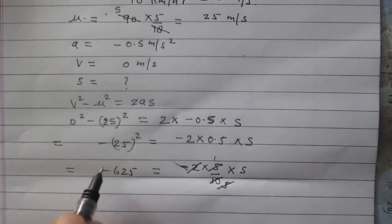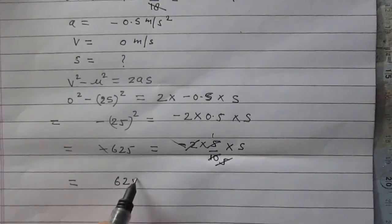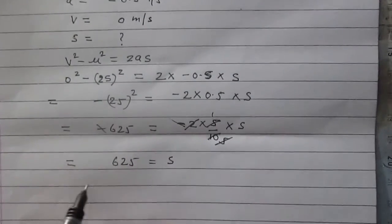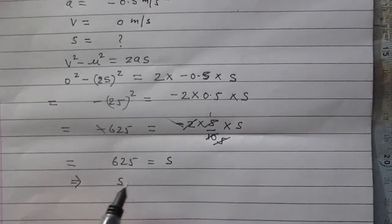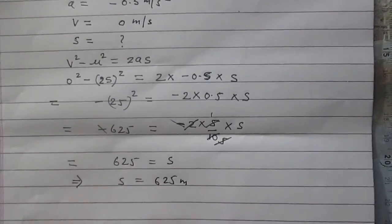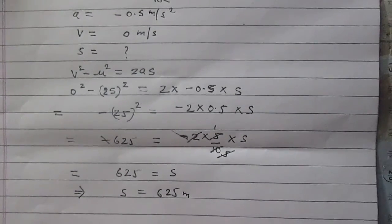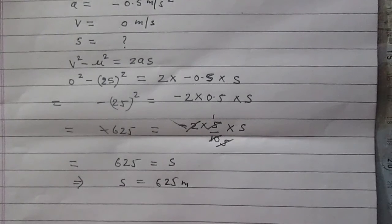You can cancel the negative sign directly. So simply 625 is equal to s, or you can say s is equal to 625 meter. So we can say that the body will go 625 meter before it is brought to rest.